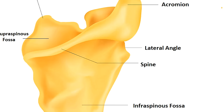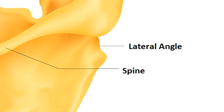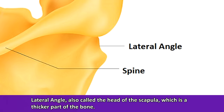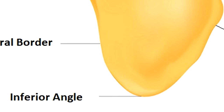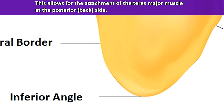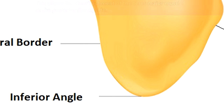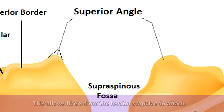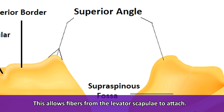There are three angles on the scapula bone. The glenoid cavity is located at the scapula's lateral angle, also called the head of the scapula, which is a thicker part of the bone. At the inferior portion or bottom of the scapula, we see the inferior angle — 'inferior' meaning away from the head or toward the bottom. This inferior angle allows for the attachment of the teres major muscle at the dorsal or posterior side. Finally, the superior angle is a small triangular projection formed at the junction of the superior border and the medial border, allowing fibers from the levator scapulae to attach.